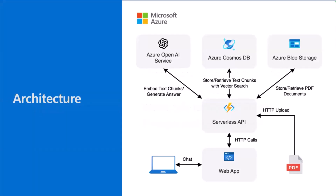As for the architecture, we use Static Web Apps to host our web client, which communicates via HTTP calls to our serverless API hosted on Azure Functions. We have a few functions: one to upload PDF files, which can be reused for other document types. Once you upload a document, it's stored in blob storage so we can retrieve the original PDF later. We also extract the text from the PDF, send it to Azure OpenAI to create vectors from that text, and store everything in Cosmos DB. We use Cosmos DB to perform our vector search as well, and of course, we use Azure OpenAI to generate answers using LLMs.